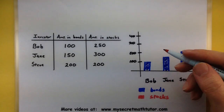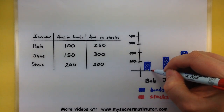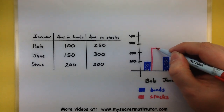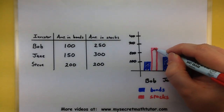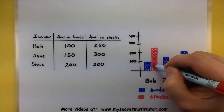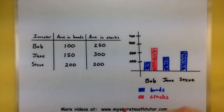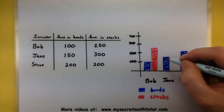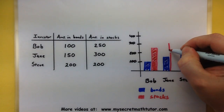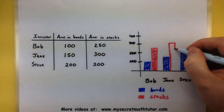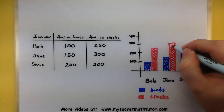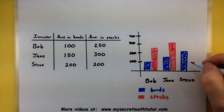Now let's do the same for all of our stocks. Starting with Bob, he's invested quite a bit into stocks, all the way up to $250. Both bars represent Bob's investments and we can see he's invested substantially more into stocks. For Jane, the stocks bar needs to go all the way up to the $300 mark. And for Steve, stocks are at $200.